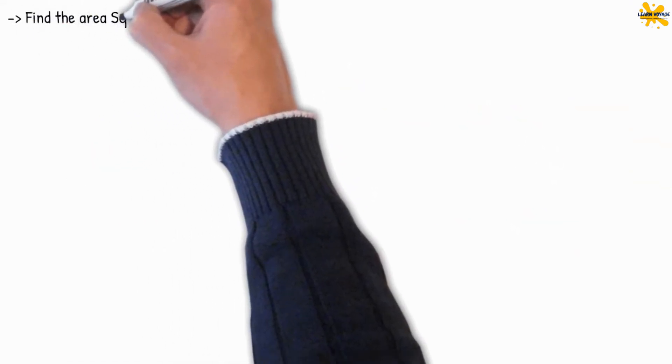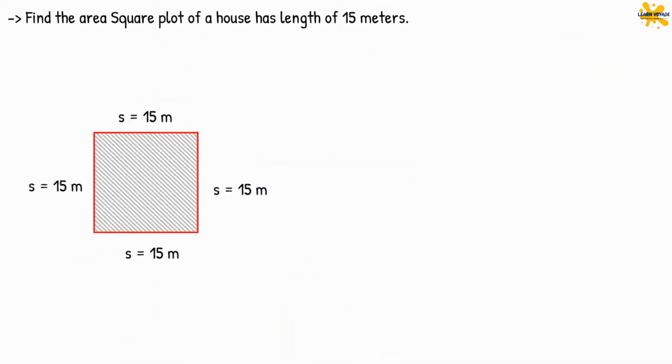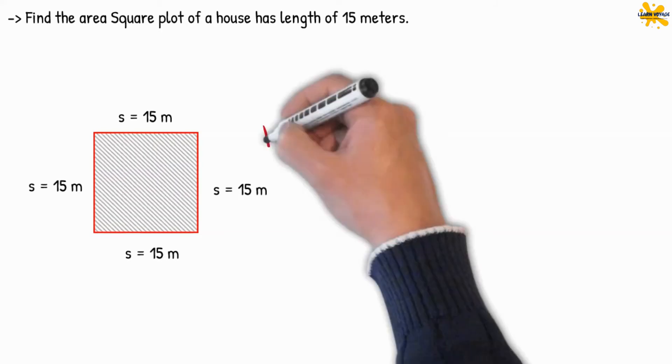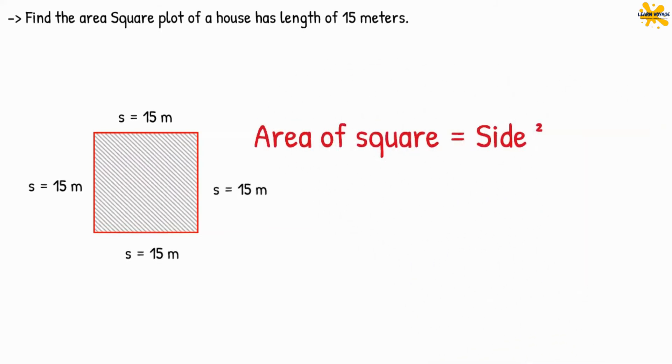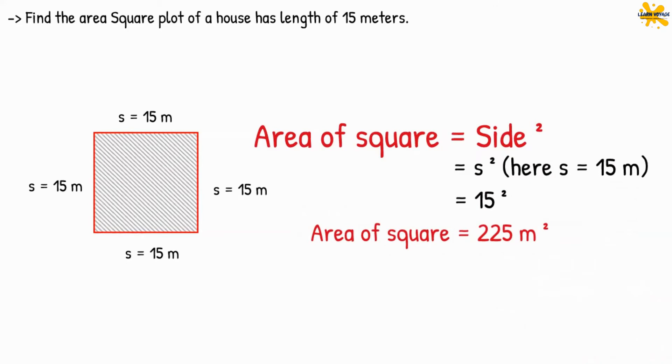Now you give it a try. Find the area of a square plot of a house with a length of 15 meters. Let me help with the calculations. Clearly side S is 15 meters. Hence the area of square A will be 15 to the power of 2, which equals 225 square meters. If you got it right, you are doing good. And if your answer was incorrect, try another one.